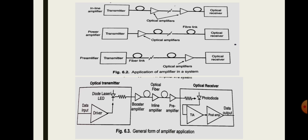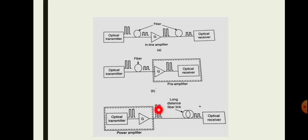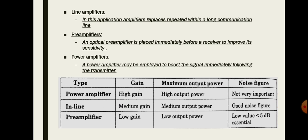The power amplifier is placed immediately after the transmitter. The amplified signal is then transmitted through the fiber link and received at the far end. The output signal from the optical transmitter is immediately fed to the power amplifier to increase its power level significantly. When transmitting through the long-distance fiber link, the amplitude is reduced, and finally it is received at the optical receiver. The power amplifier increases the amplitude of the original signal.